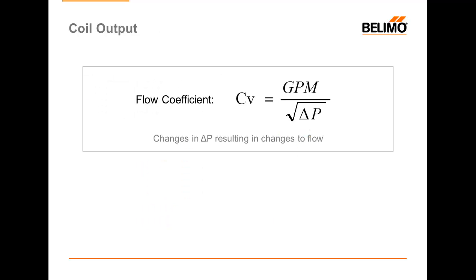Let's start with a little bit of math. This is the formula for flow coefficient, and this is how we would size a standard pressure-dependent control valve. Cv, or flow coefficient, is equal to the required GPMs of the coil divided by the square root of the design pressure drop. This pressure drop is typically defined by the engineer. A valve will be selected based on the Cv that is calculated with this formula. Once the valve is purchased, that Cv becomes a fixed number. So if I bought a valve with a Cv of 10 and the design pressure drop is about 4 psi, I'll get a certain number of GPM every time I give it 4 psi. However, if that same valve sees 10 psi, I'm going to get a much higher flow. This is what we talked about earlier as one of the flaws of pressure-dependent or position-controlled valves.